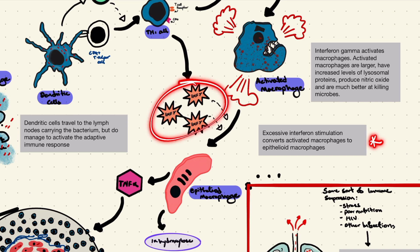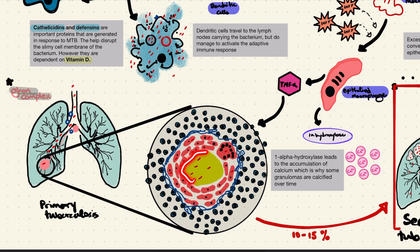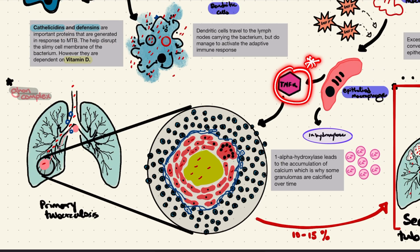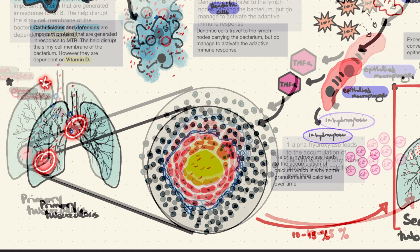Due to constant stimulation by interferon-gamma, activated macrophages become epithelioid macrophages — named for their resemblance to epithelial cells — whose main job is to wall off the infection and form a granuloma. A granuloma consists of a central caseating necrosis surrounded by epithelioid macrophages, followed by a layer of lymphocytes, with fibroblasts producing collagen to reinforce the barrier. Epithelioid macrophages produce TNF-alpha to maintain the granuloma, and upregulate 1-alpha hydroxylase, allowing calcium accumulation and calcification over time — which is what enables detection of the Ghon complex on chest X-ray.